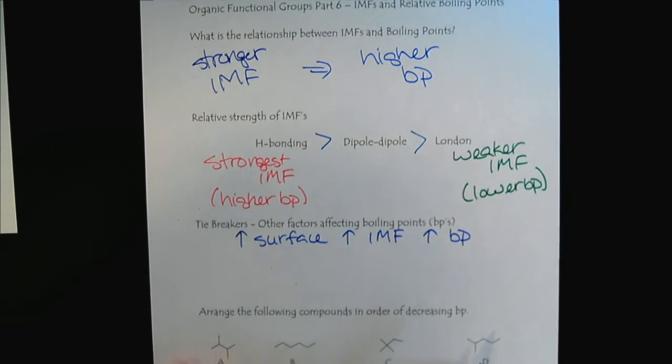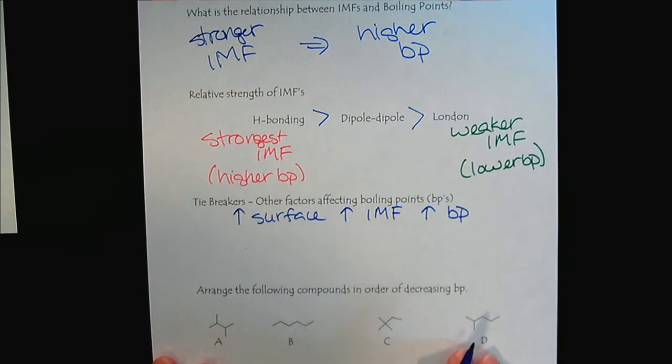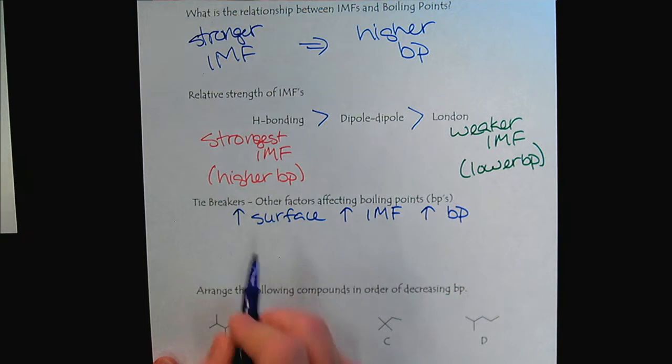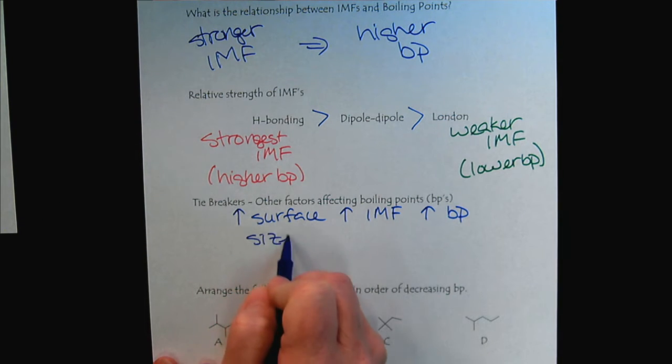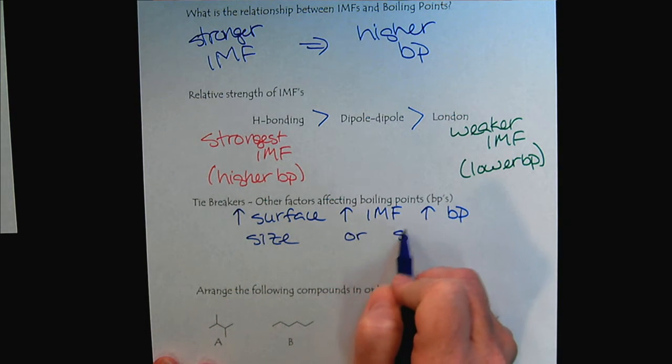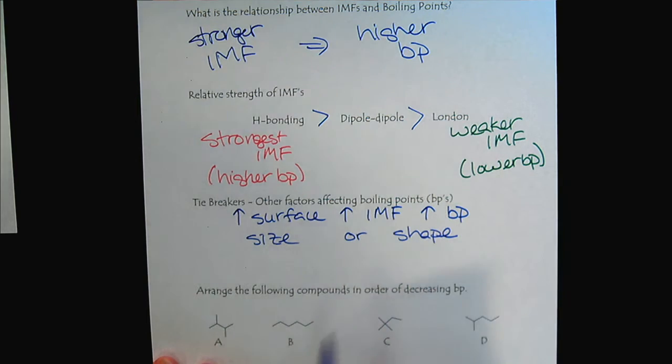So we know that there's two ways to increase the surface area. We could either do that with size or shape. So we looked at examples in the past.